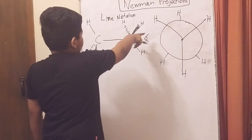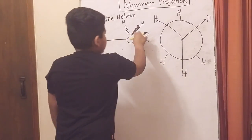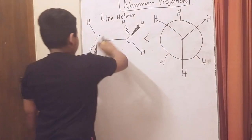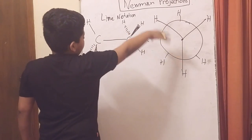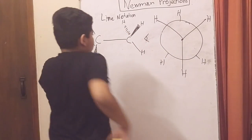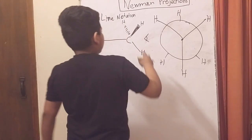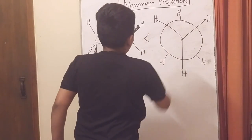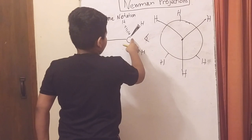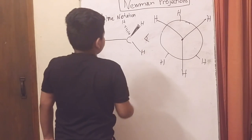This is the line notation for ethane and we can see the dash bond and wedge here. Now we're going to have to change our perspective. Suppose this is our eye and we're seeing it through this perspective.